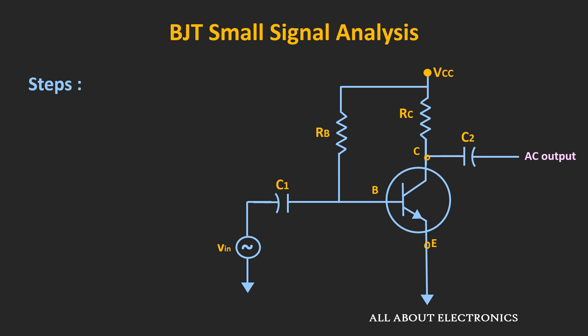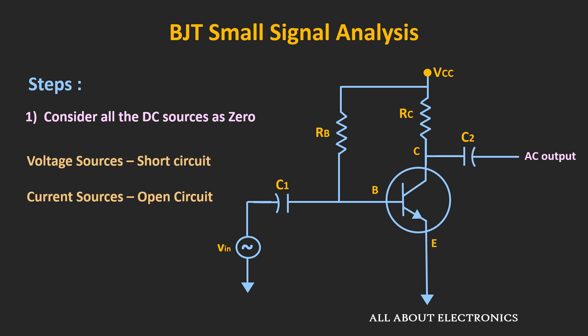Let's see the steps for the small signal analysis. First of all, consider all the DC sources in the circuit as zero. Since the input signal is very small, under the small signal approximation we can apply the principle of superposition and consider AC and DC sources separately. During AC analysis, we consider all DC voltage sources as short circuits while all current sources are treated as open circuits.